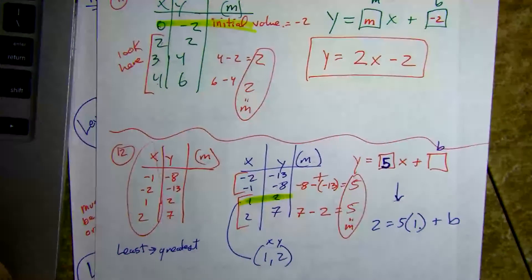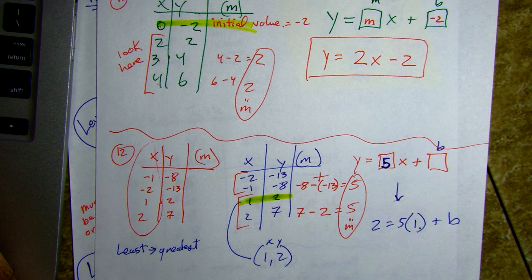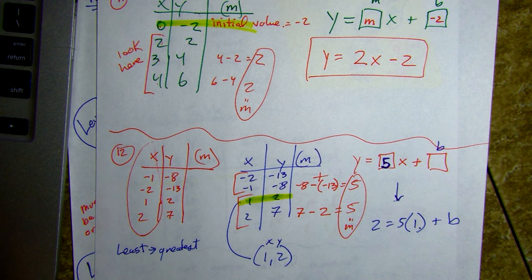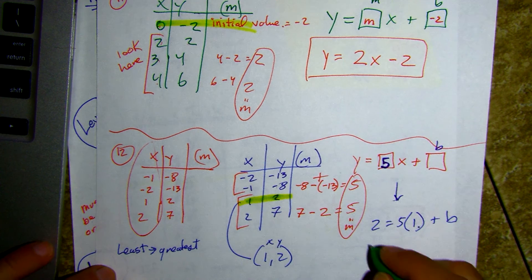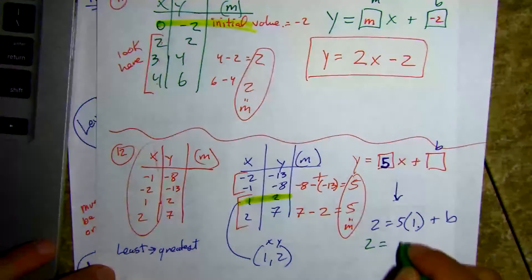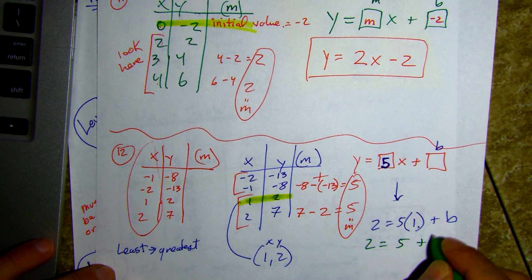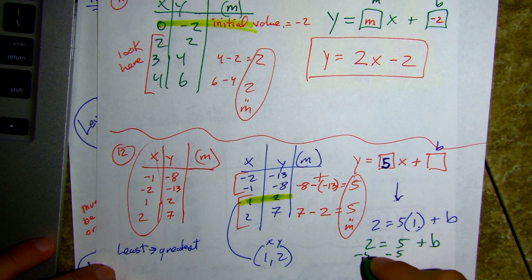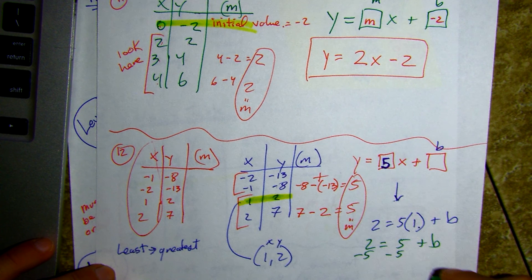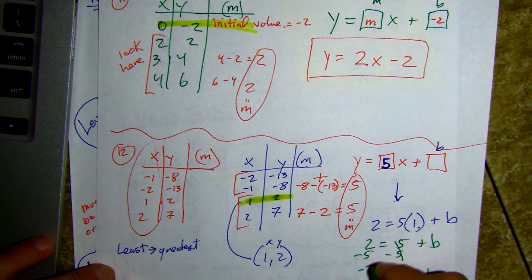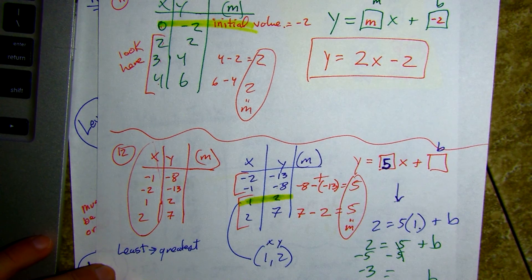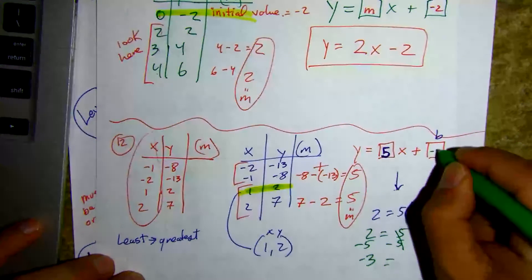Working this out: two equals five plus b; minus five, minus five — b is negative three. I'll put negative three here and rewrite it: five x minus three.